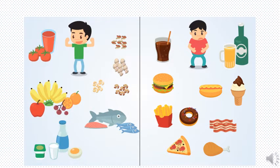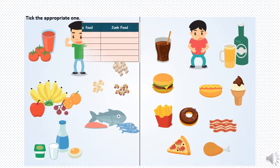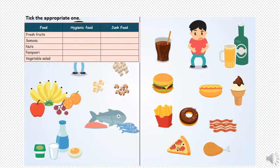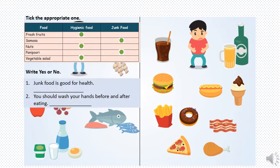Here we have names of food. We need to say whether it is healthy food or junk food. Fresh fruits are healthy food. Samosa is junk food. Nuts are healthy food. Pani puri is junk food. Vegetable salad is healthy food. Write yes or no: Junk food is good for health? No.